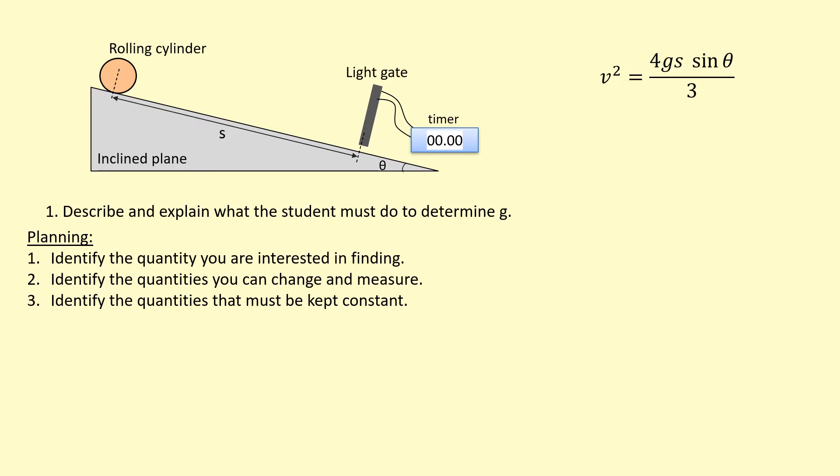Next we need to identify what needs to be kept constant. If I'm changing theta, I need to keep everything else constant, so I'm going to keep S as constant. I'm going to use the same rolling cylinder and so on.